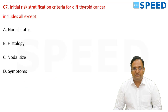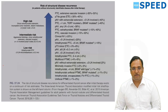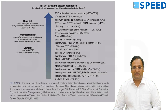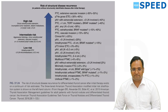The initial risk stratification criteria for differentiated thyroid cancer includes all except symptoms. Symptoms are not included. The correct criteria include nodal status, histology, number of nodes, and size of the nodes as part of risk stratification for thyroid cancer.